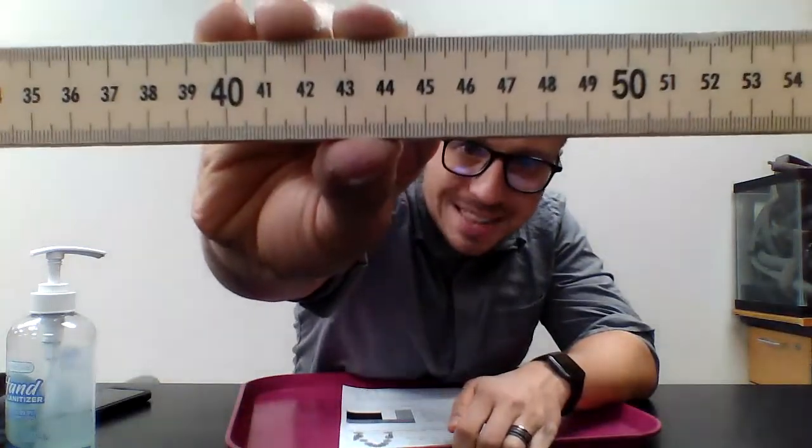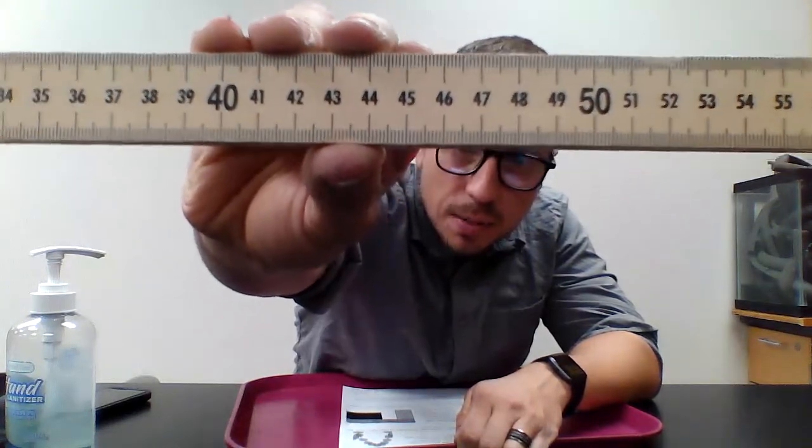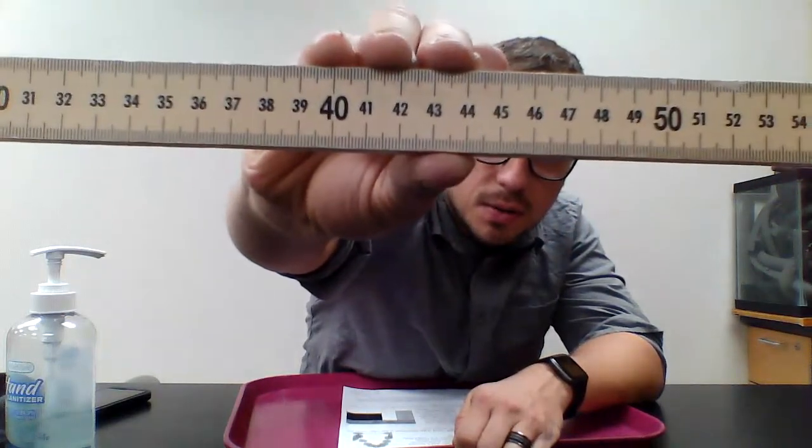We're going to be using that metric side. Remember, the resolution is the smallest interval that can be measured by an instrument. So how much do each one of these little tick marks represent? The big numbers are centimeters, but what do those little tick marks represent? And does it have an uncertainty digit? Why or why not?